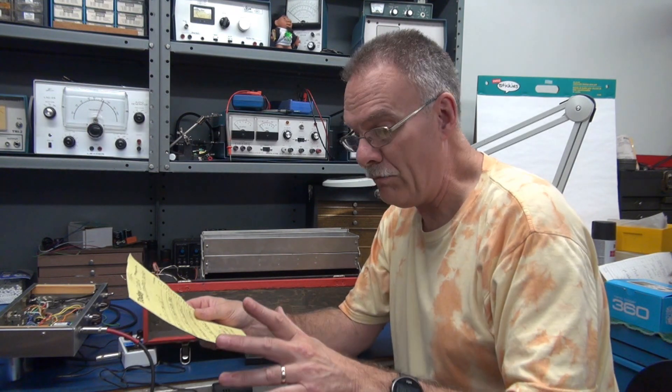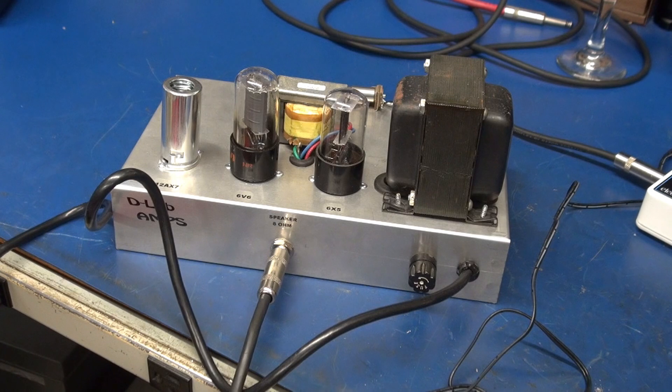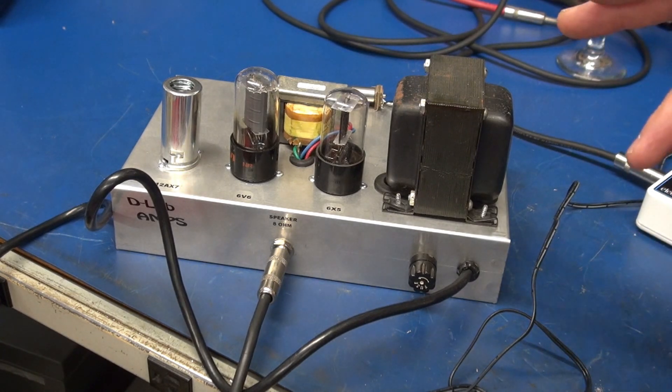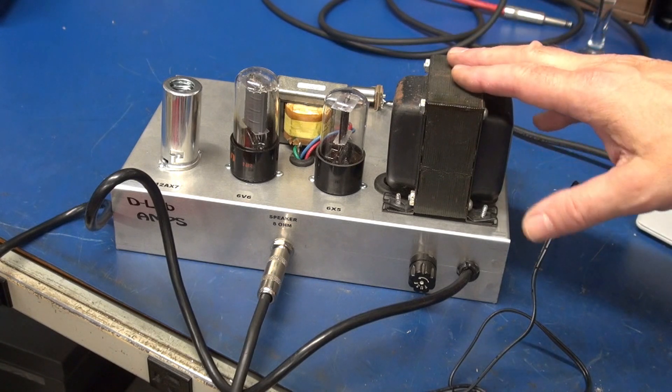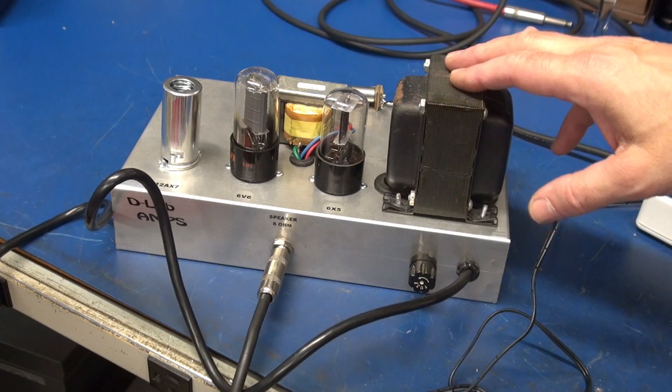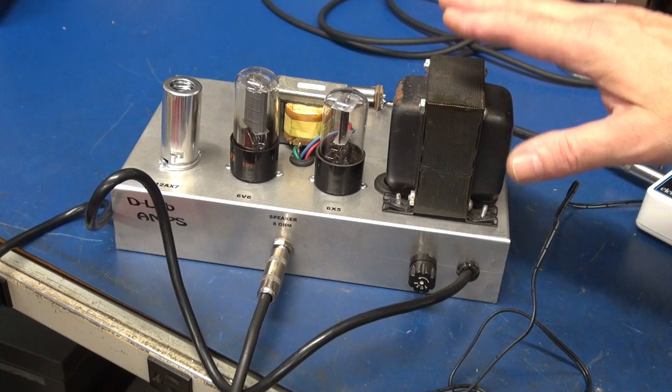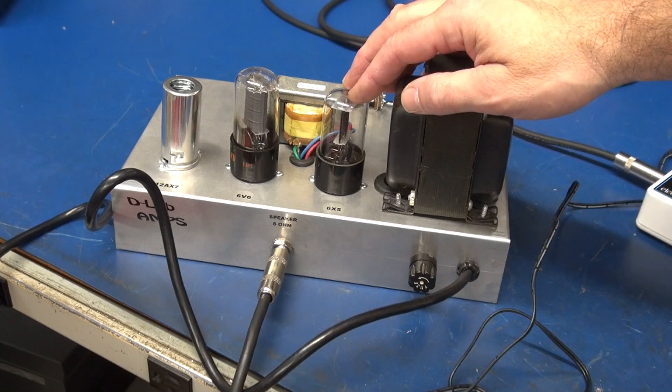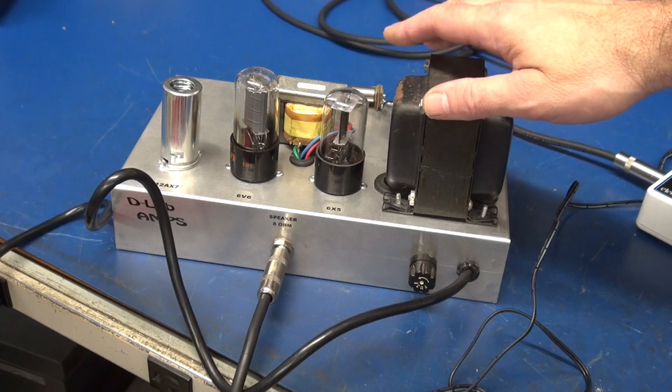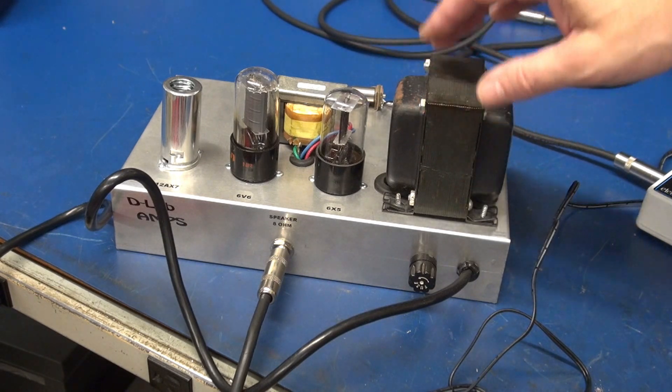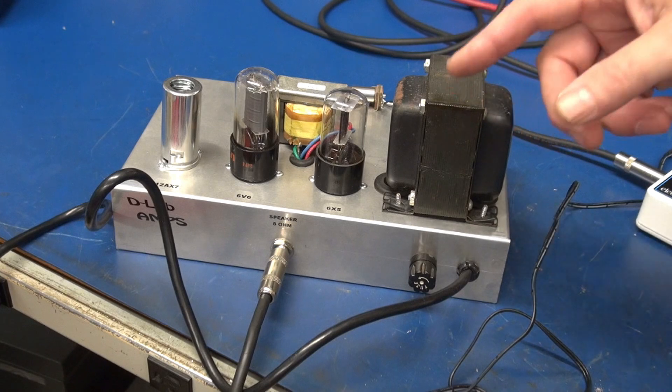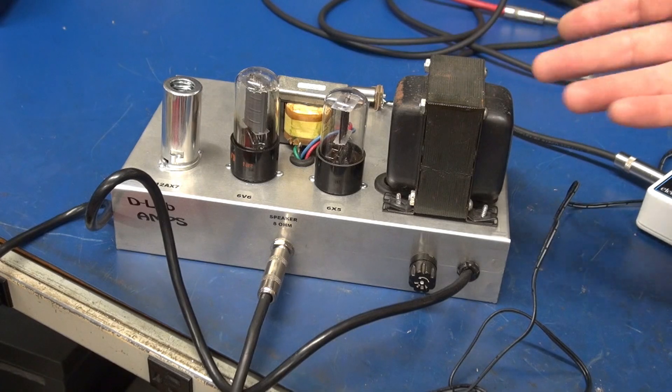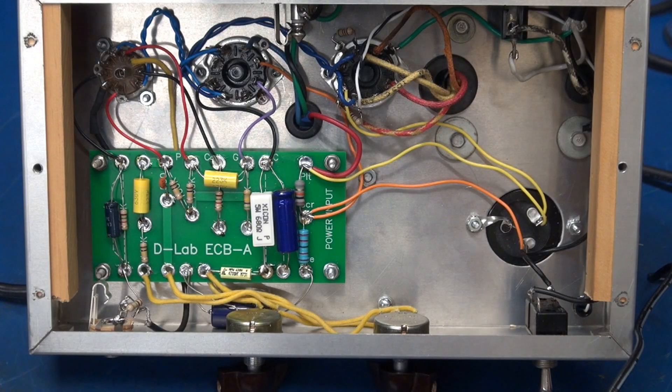Here is the amplifier we're going to be troubleshooting. It is very similar to the design of a Fender 5F2. The only difference on this model is the rectifier tube is a 6X5 rather than a 5Y3. The rest of the circuitry is almost identical, so you can follow along on your 5F2 schematic while we're troubleshooting this problem.